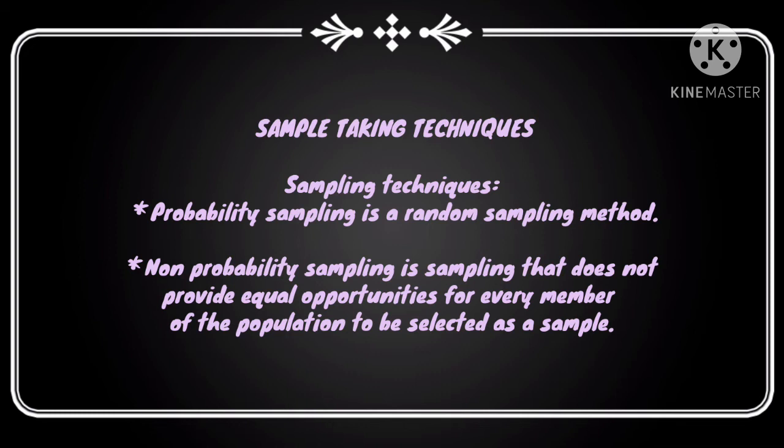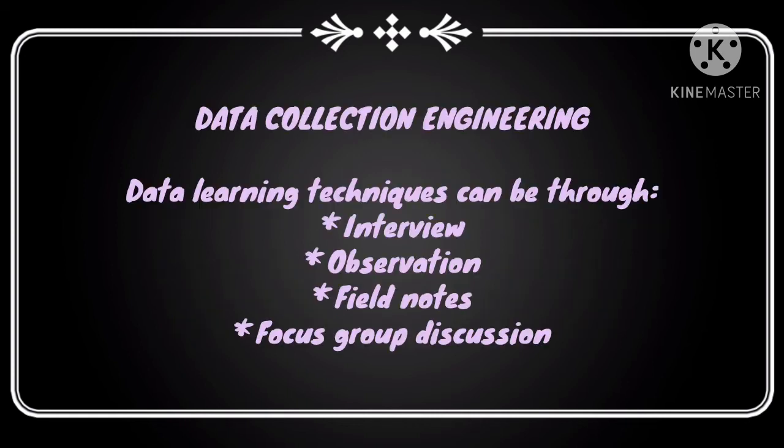Two, non-probability sampling is a method that doesn't provide equal opportunities for every member of the population to be selected as a sample. Data collection techniques can include interview, observation, field notes, and focus group discussion.